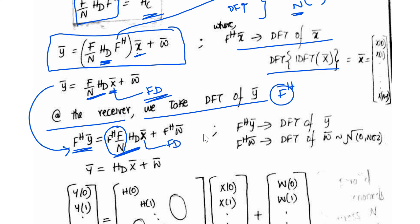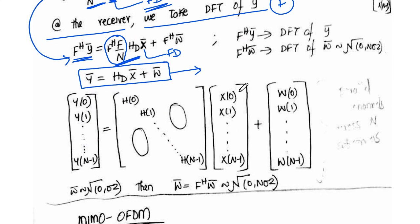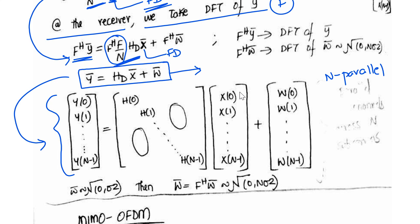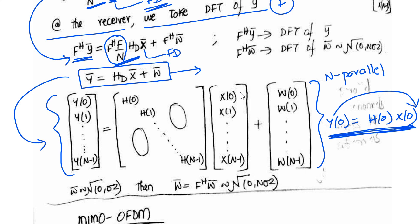Writing it in vector form, all N samples are clearly separated out. We see N parallel flat fading channel equations across all sub-carriers, with no ISI. For example, Y(0) = H(0)·X(0) — Y(0) depends only on X(0) and there is no ISI. This is how across all sub-carriers the equations are separated, making processing much simpler.